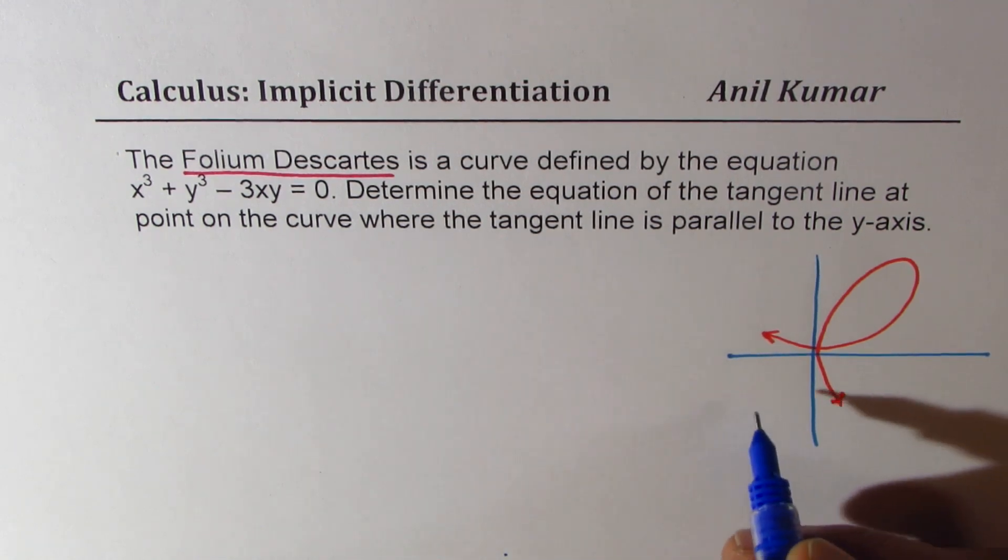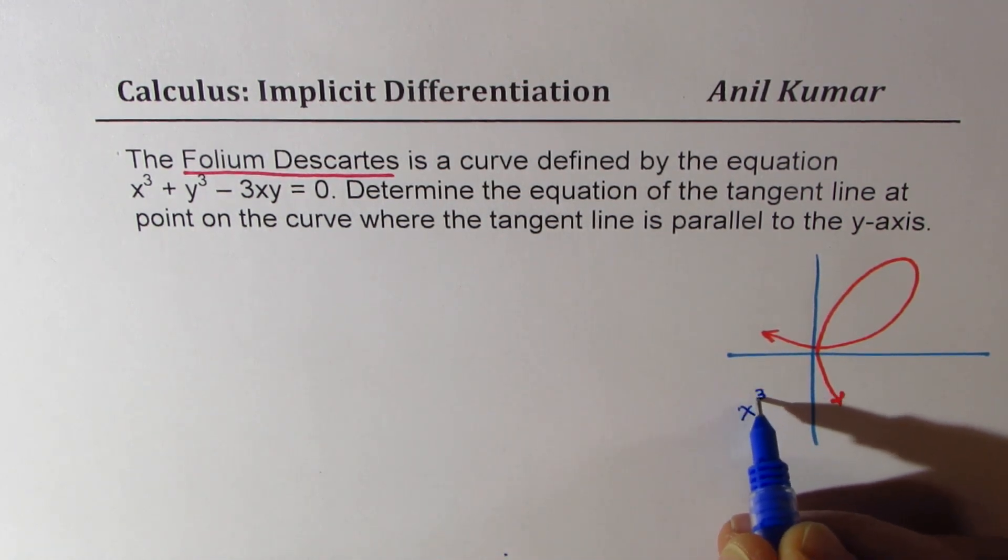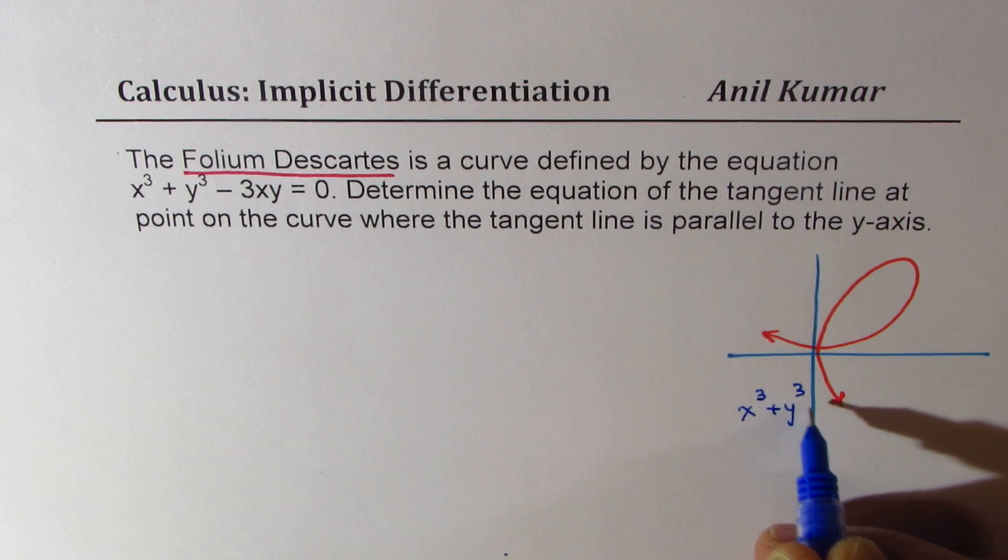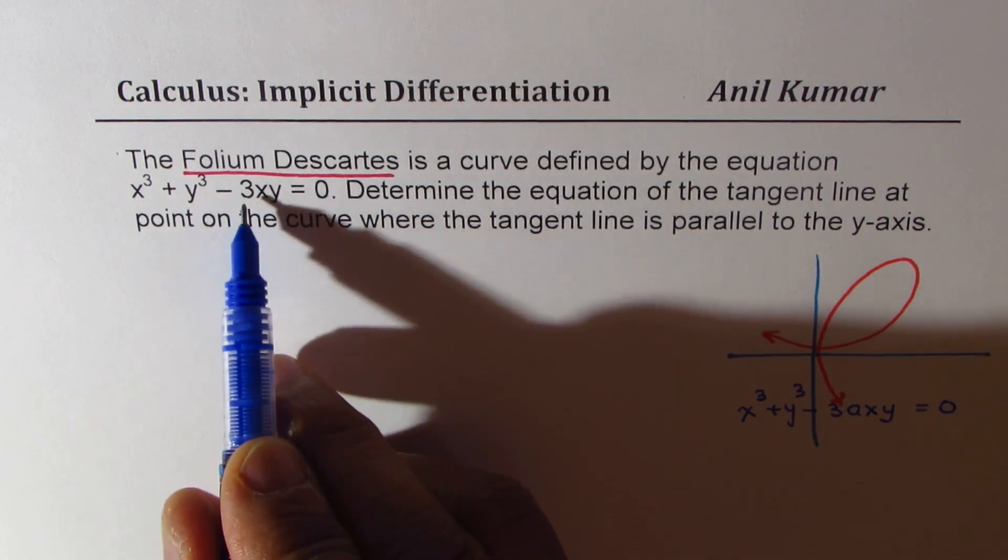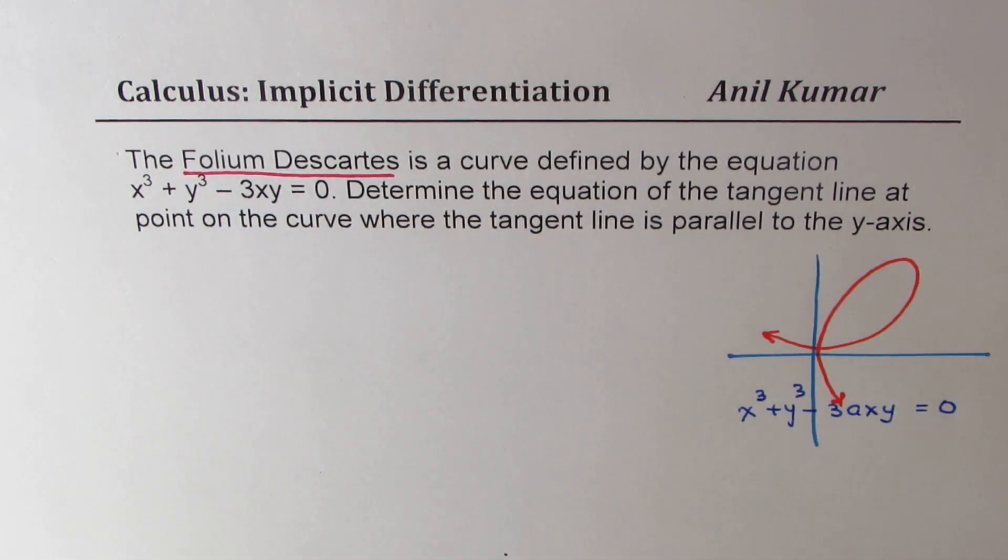And in general, the equation x cubed plus y cubed minus 3axy equals to 0. In our case, a is 1.